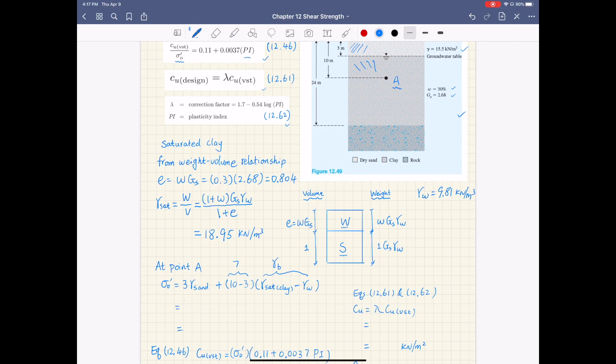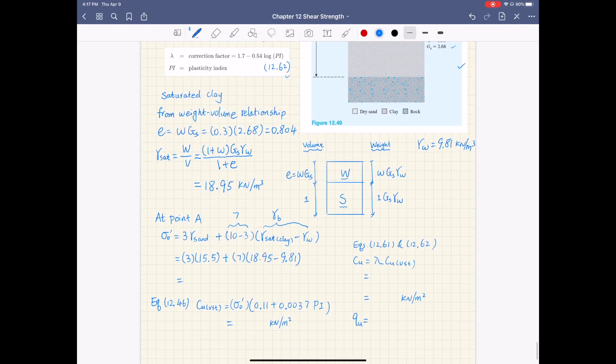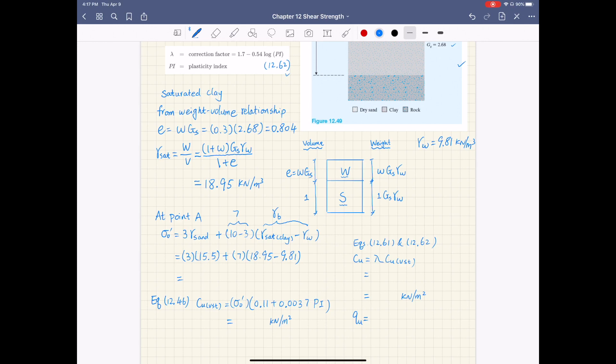If you plug in the numbers, 3 times gamma sand is 15.5, that's given to you, plus 7 times the buoyant unit weight of clay, 18.95 minus 9.81, you'll get the effective overburden pressure at A of 110.45 kilonewtons per meter squared.